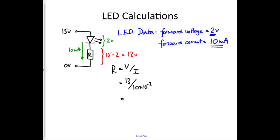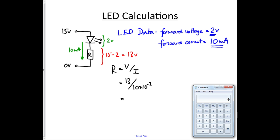So we need to find our calculator. Here it is, and we go 13 divided by, now 10 milliamps in amps is 0.01, and we go equals, and we get 1,300 ohms. So that's the value of our resistor that we need.